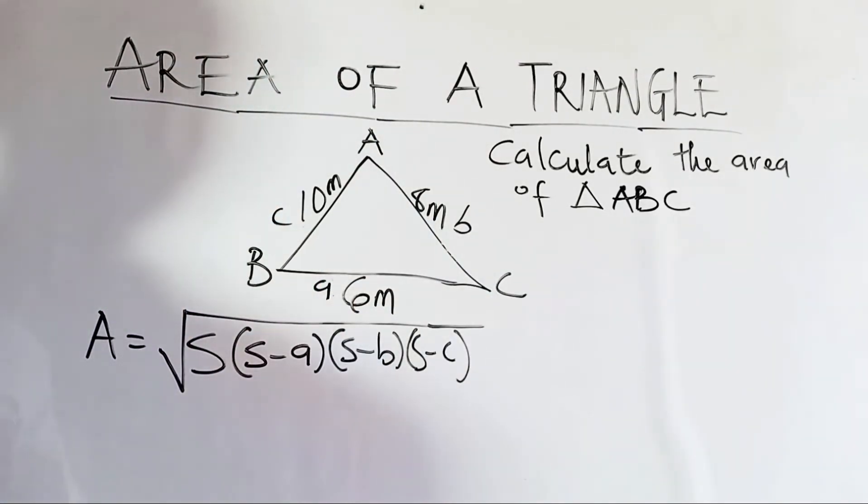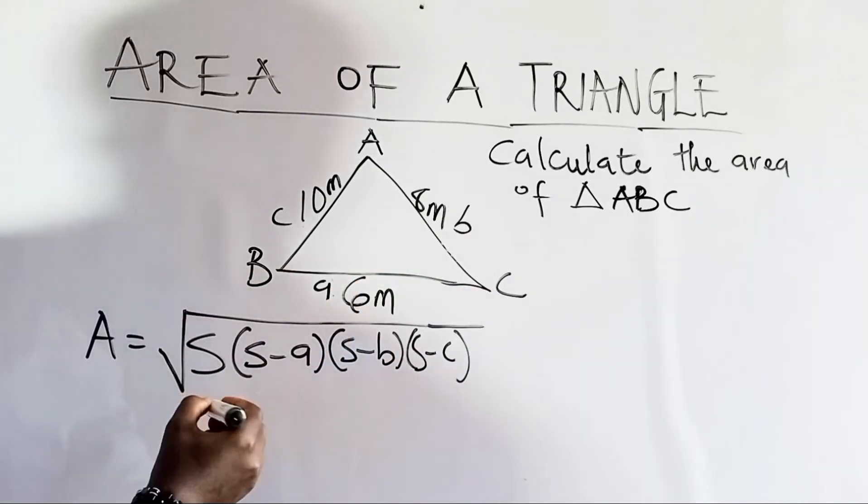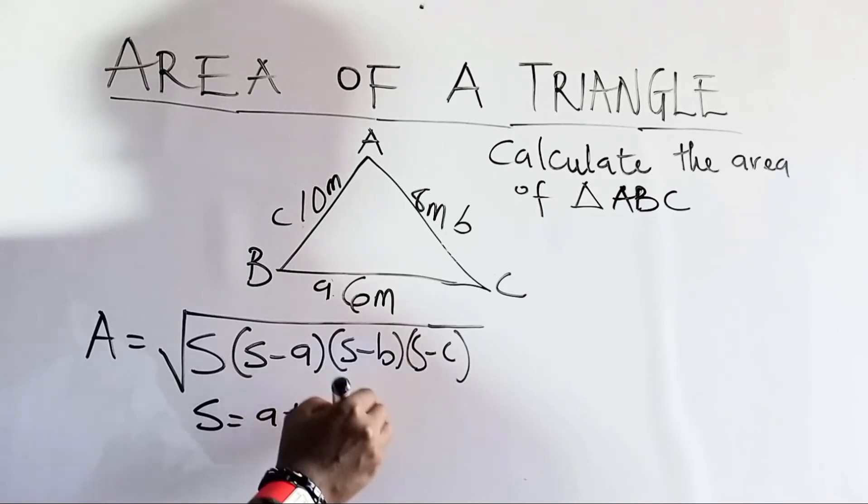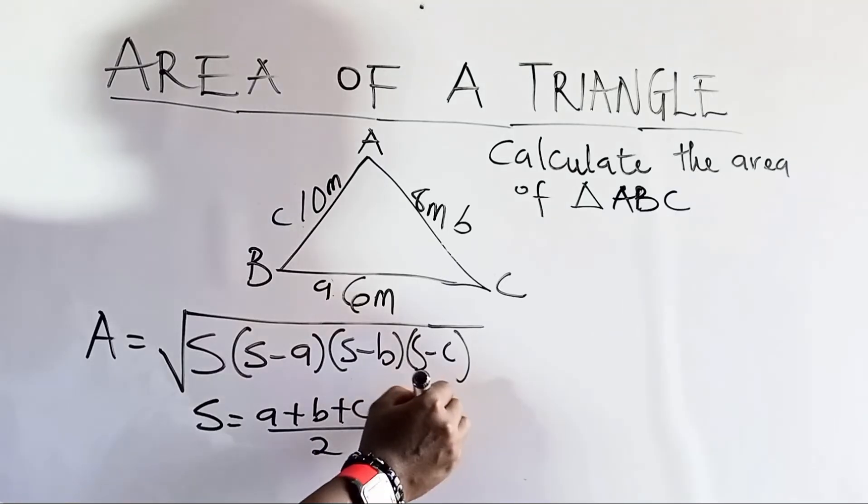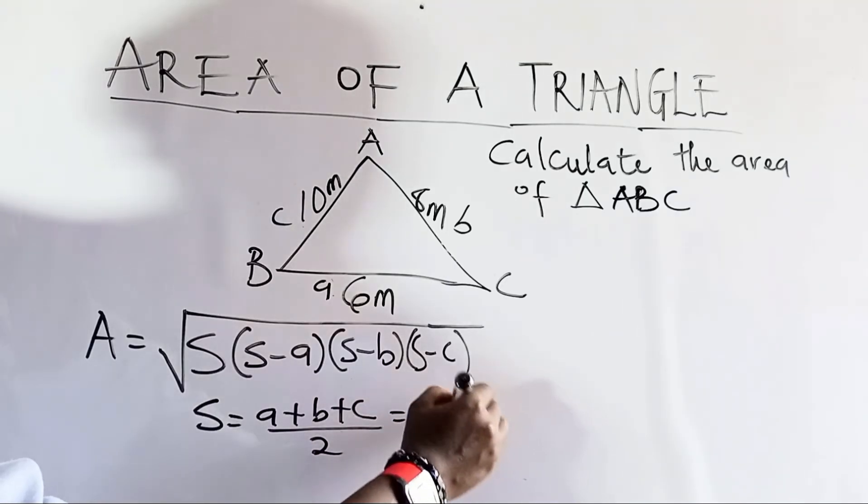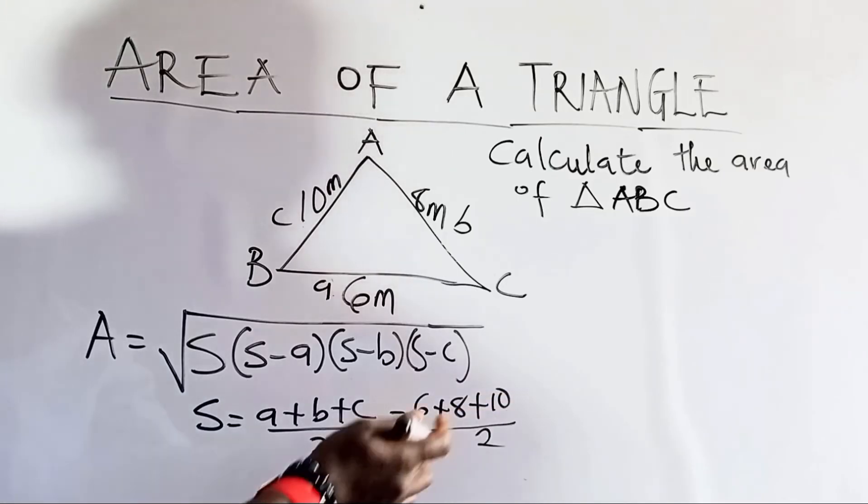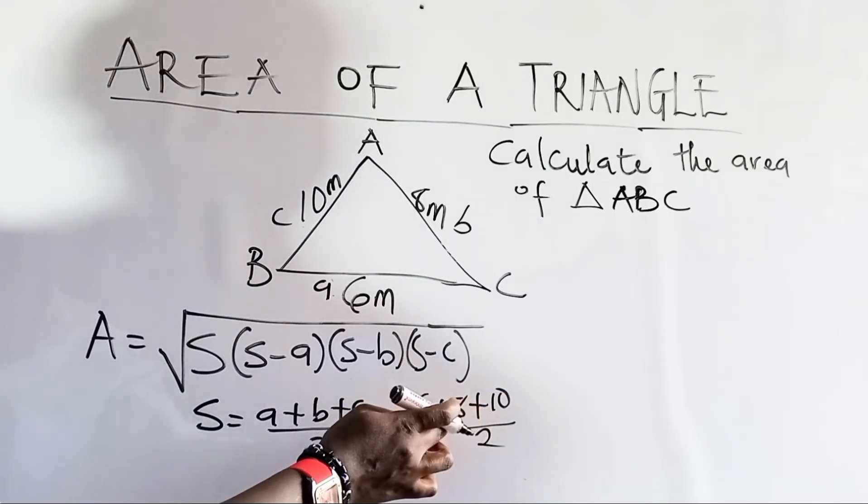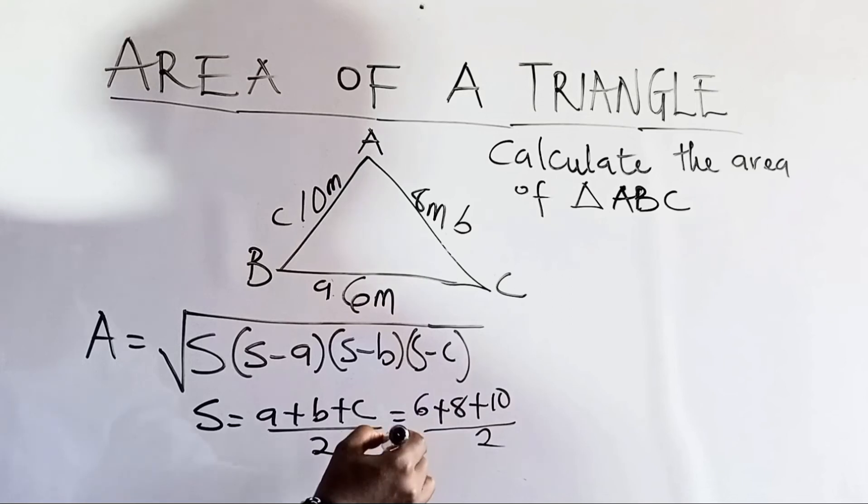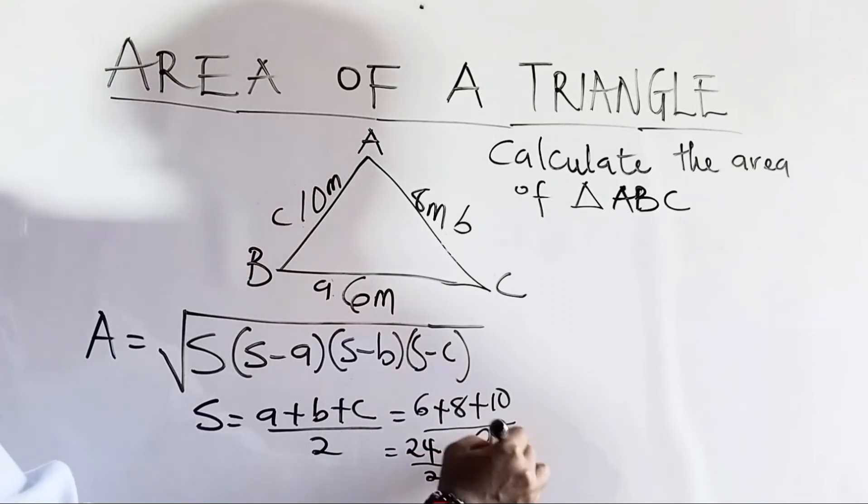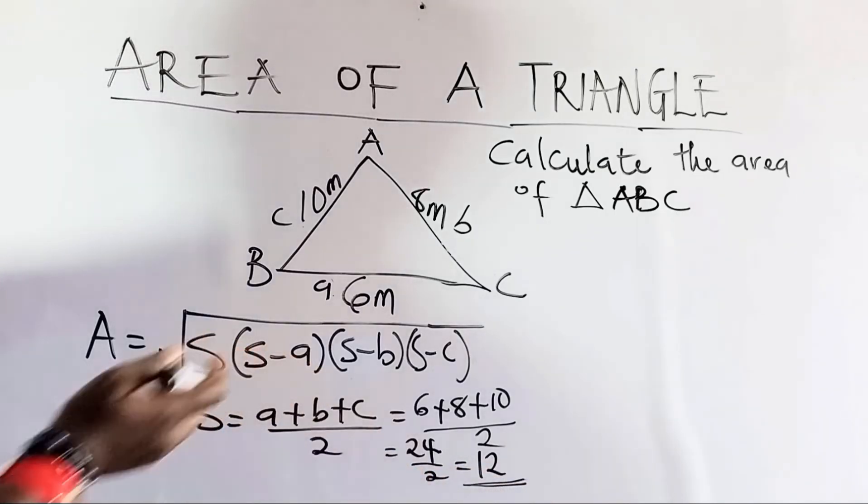To do that, we simply sum the three sides and divide by 2. That is, we have s equals a plus b plus c divided by 2. In this case now, a is 6, b is 8, and c is 10, divided by 2. 6 plus 8 is 14. 14 plus 10 is 24. So, we have 24 divided by 2, and this gives us 12 as the value for our s.